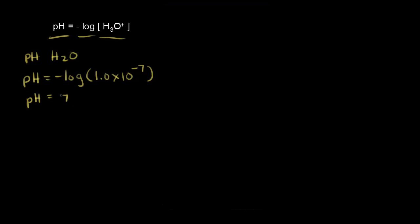If you're concerned with significant figures, you would have to write 7.00, because we had two significant figures for our concentration. When you're dealing with logarithms, the only significant figures in a logarithm are the digits to the right of the decimal point. So we have two significant figures to the right of our decimal point, matching the number we had for concentration.